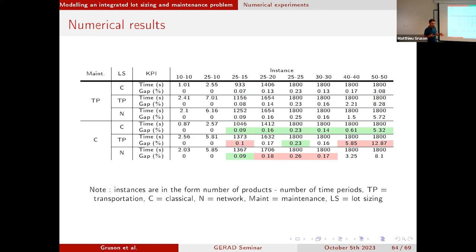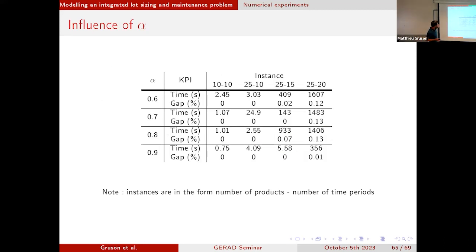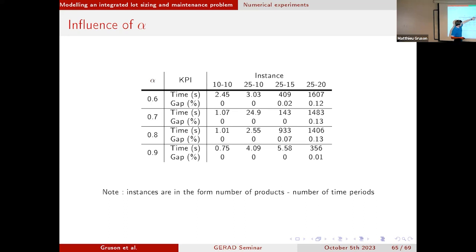We were surprised by this, and this is where we are currently with this project — it's an ongoing project, so any comments are welcome. We also looked at what happens if we vary the alpha parameter, the decrease of capacity, and it's not clear so far. Obviously, if you increase the instance size, the gap gets higher and the CPU time gets higher. But you can see, for instance, the CPU time can go from 400 seconds to 140 and back up again — so how the CPU time and gap evolve with this parameter needs more investigation.